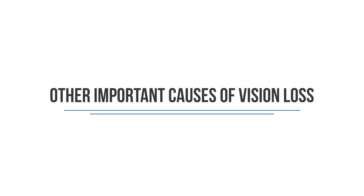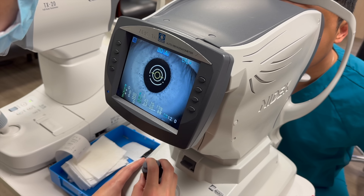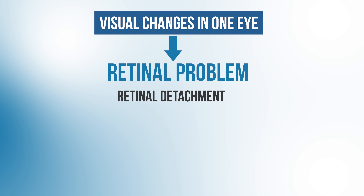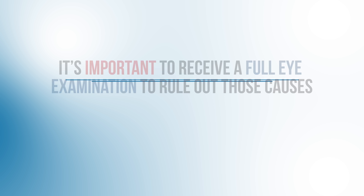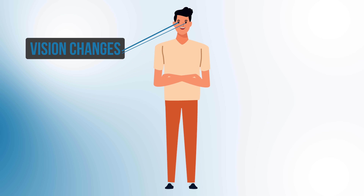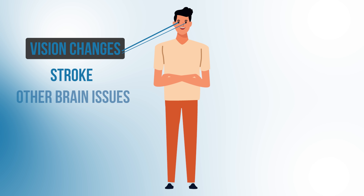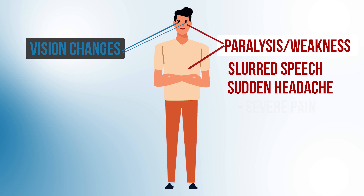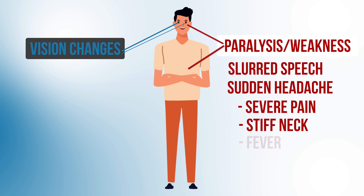Let's go through other conditions we need to rule out if you're having new vision changes. Generally, if you're experiencing new visual changes, you should be evaluated by a doctor as soon as possible. If you're experiencing vision changes in one eye, it could be a sign of a retinal problem like a retinal detachment, a vitreous detachment, or a retinal artery occlusion. Retinal detachments can present as shadows over the vision, and retinal artery occlusions can cause severe blurring or blocking out of vision. If you're experiencing vision changes in both eyes, your doctor will need to rule out causes like a stroke or other brain issues. Signs requiring emergency medical attention include paralysis or weakness on one side of the face or body, slurred speech, sudden severe headache unlike anything you've had before, or a headache with a stiff neck, fever, confusion, or double vision.